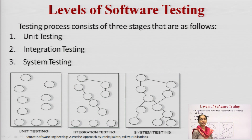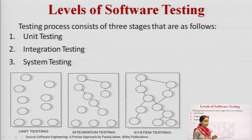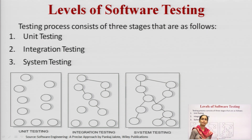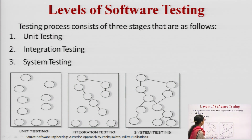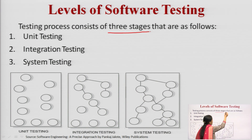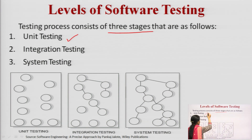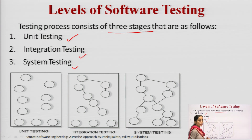There are different levels of software testing. Testing can be manual or automated. There are three main stages: first is unit testing, then integration testing, and then system testing.